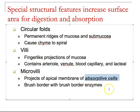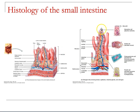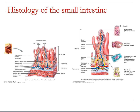On the tops of those villi are microvilli, and that's where enzymatic digestion occurs so that absorption can occur. Here is one individual cell on a villus with microvilli on its surface. Digestion occurs here, and we absorb into the lamina propria and into the circulatory system — unless you're a fat of a specific size, in which case you go into the lymphatic system.